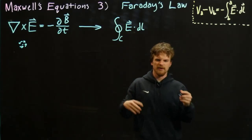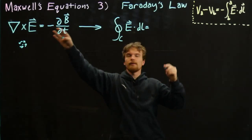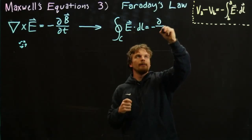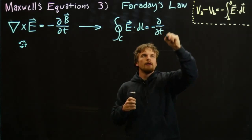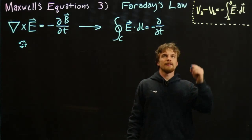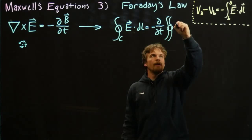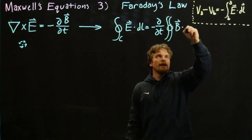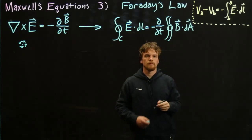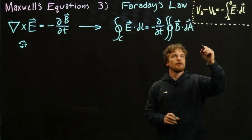C indicates we're integrating around the outside edge of our shape, and we'll see we can turn that into a circuit. That side is all equal to — the negative sign stays — and we can pull the time derivative out. Now we integrated the B field over a surface, so we get the surface integral of our B field dotted with our differential area.